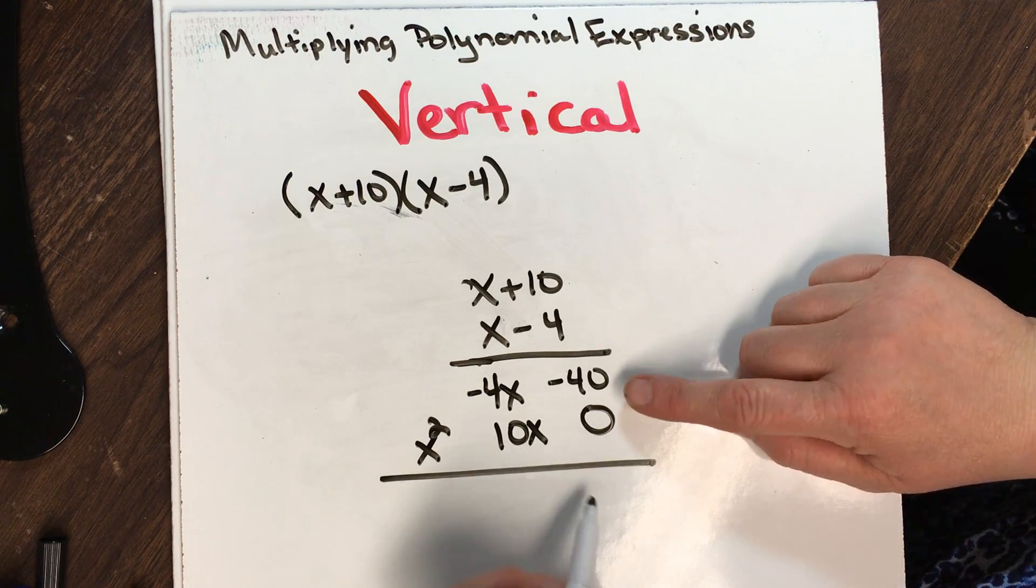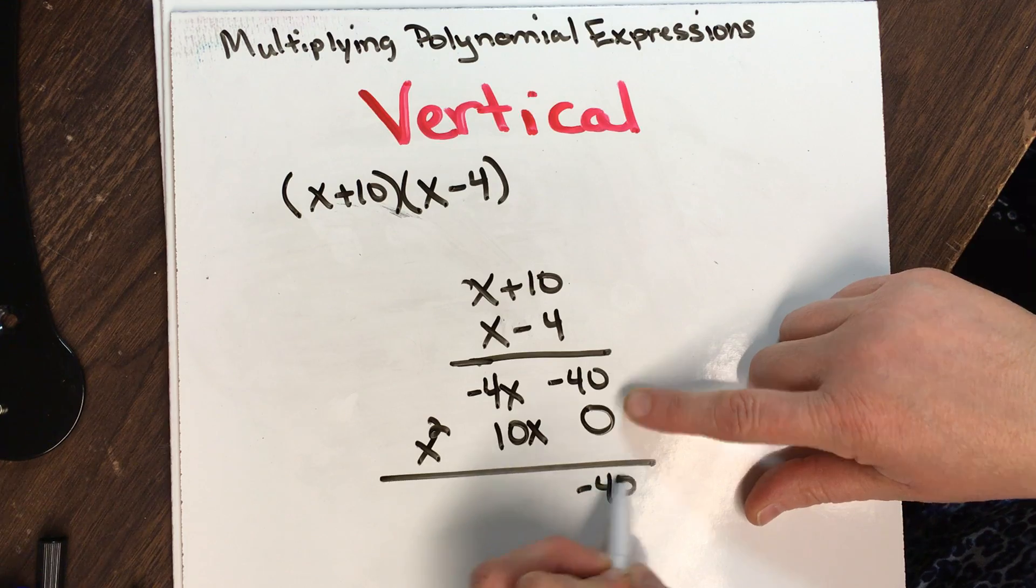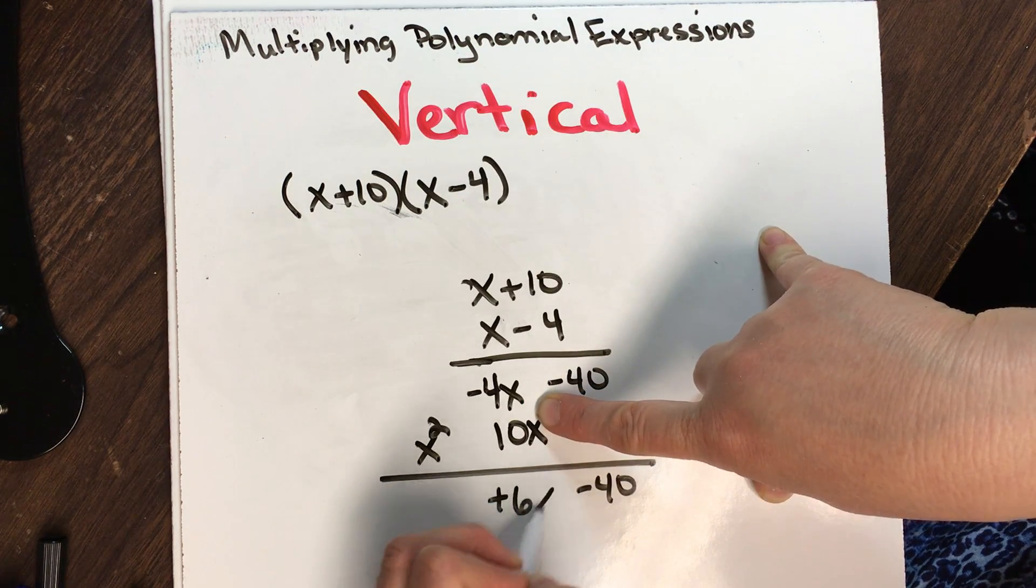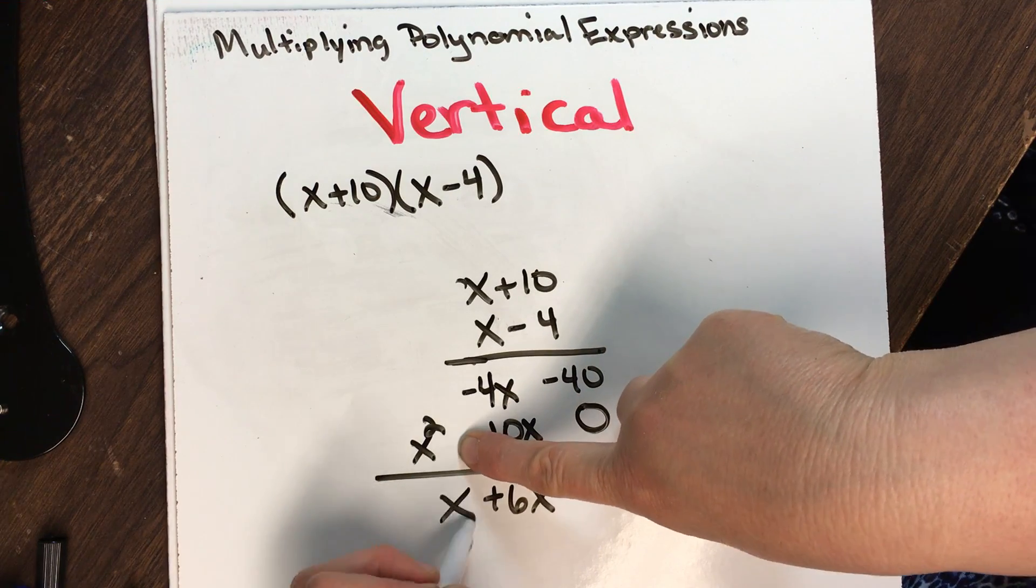Now I'm going to put my pieces together. Negative 40, put these two pieces together, that's a positive 6x, and bring down my x squared.